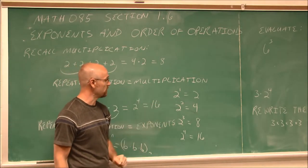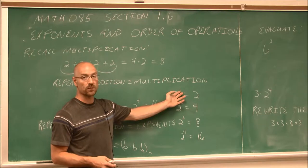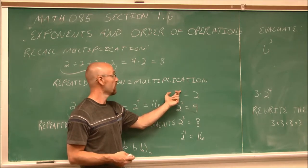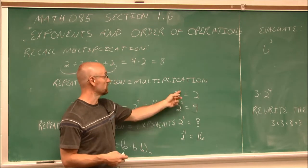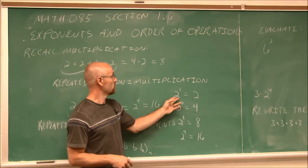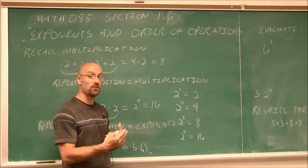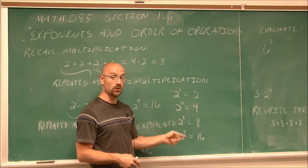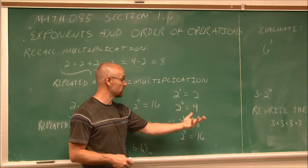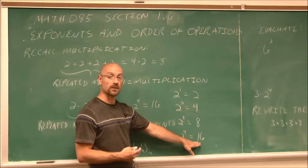Let's look at examples of 2 to some power and discuss the terminology. If we have something to the first power, that just means one factor of that value — so 2 to the first is just 2. When we talk about powers, we use the terms first, second, third, fourth, and so on, but the second and third have special names. 2 squared is 2 times 2. 2 cubed is 2 times 2 times 2, which gives us 8. And 2 to the fourth is four factors of 2, giving us 16.